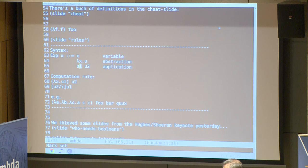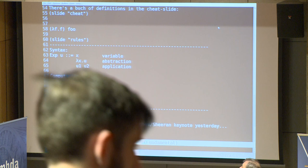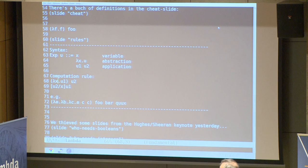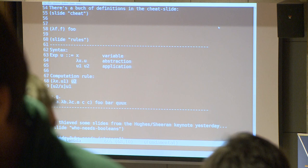That's very simple. And then you have a computation rule: if you have a lambda abstraction that is the function part of an application, you can take the function body and replace every occurrence of the parameter variable within that expression. That's a little abstract, so maybe we should look at another example.